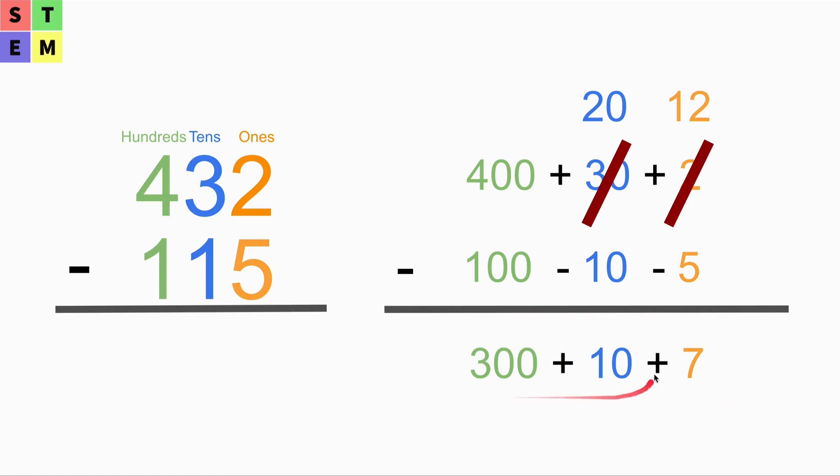300 plus 10 plus 7, which is 317. So let's go back to this number here. We are doing exactly the same. At the tens place, we are going to borrow 10 to the ones place.